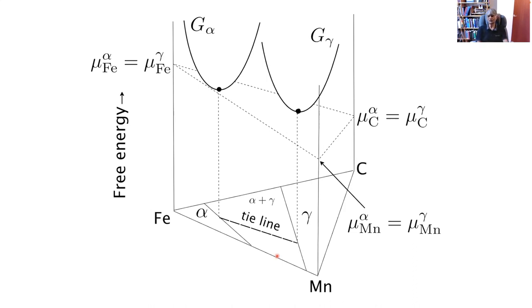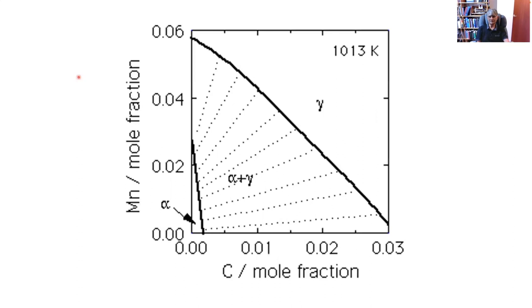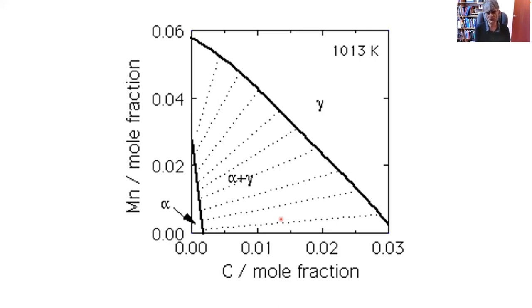The conditions for equilibrium — equality of chemical potentials of all species — are satisfied along all those tie lines. This is an isothermal section of the iron-manganese-carbon phase diagram showing a myriad of tie lines. Software such as CALPHAD, Thermo-Calc, MTDATA, and PANDAT allow calculation of these tie lines for most systems of interest. We can take access to tie lines as a given.